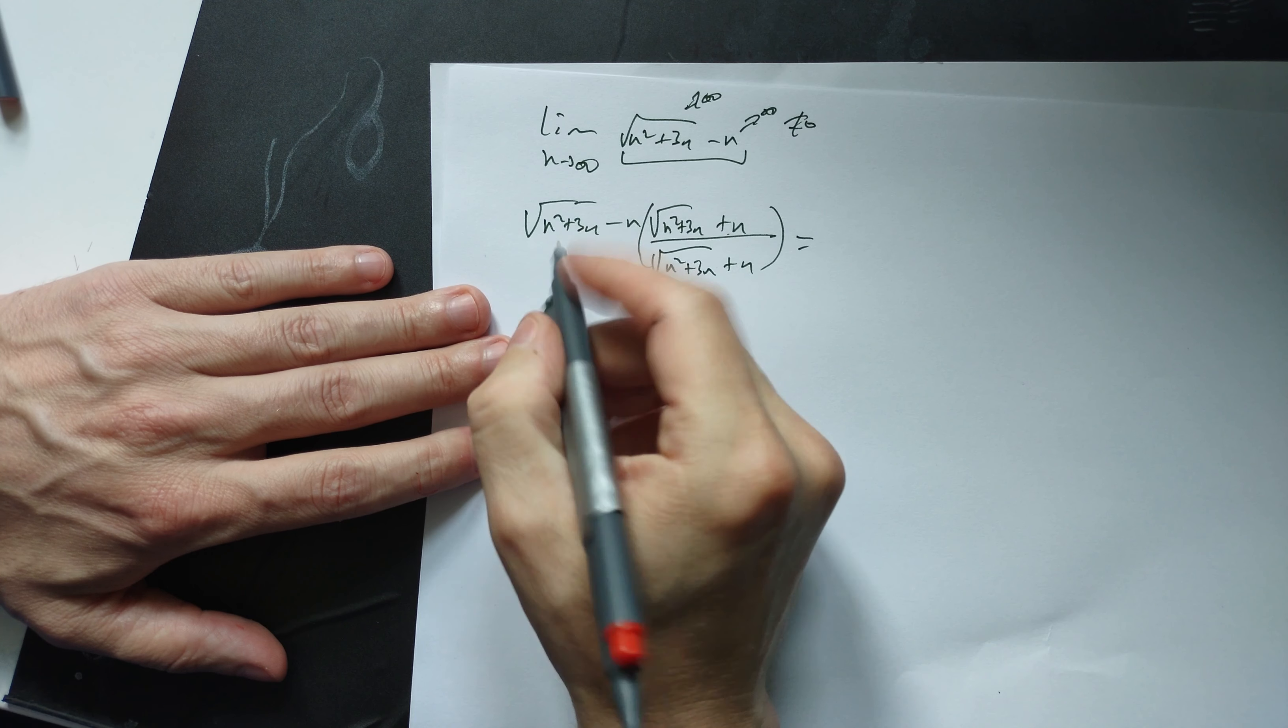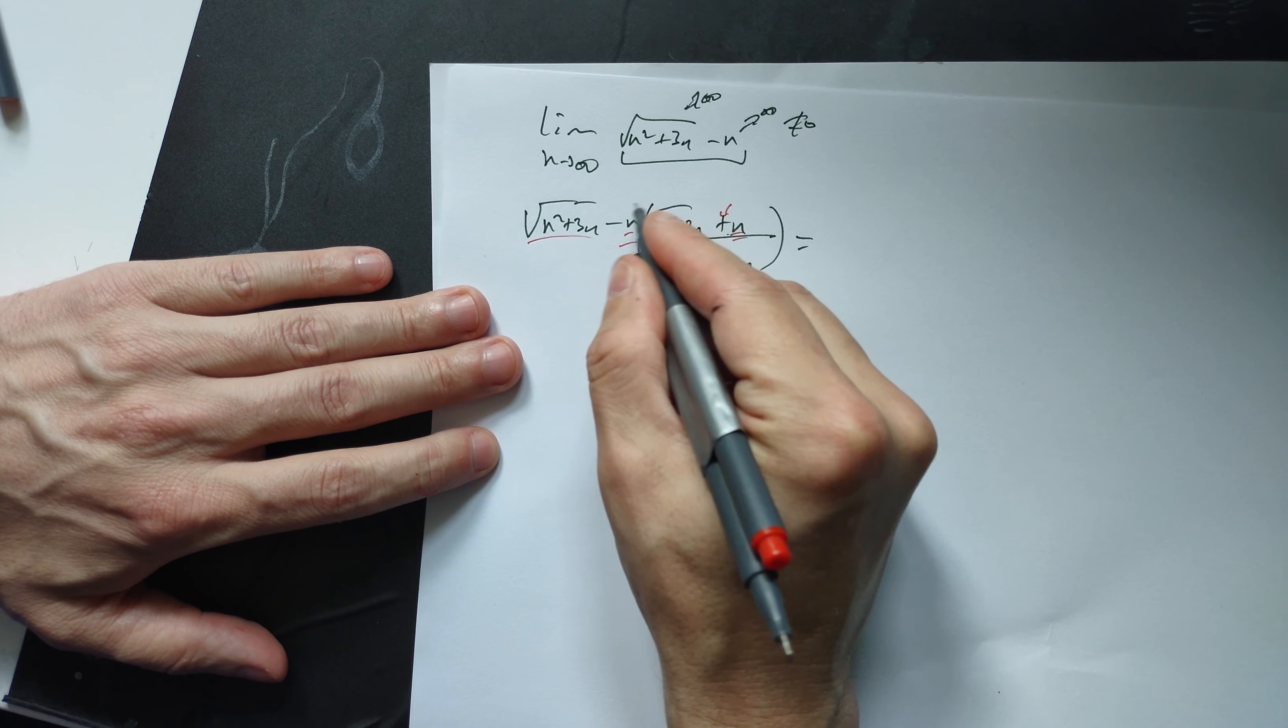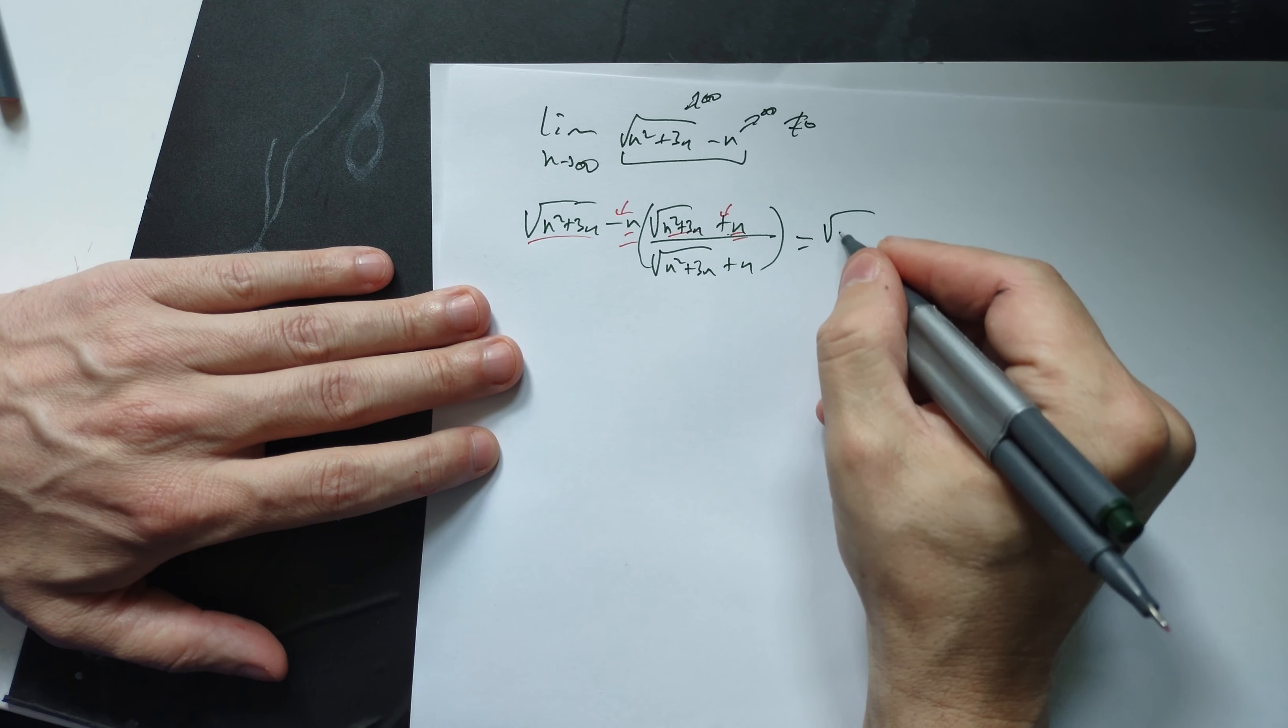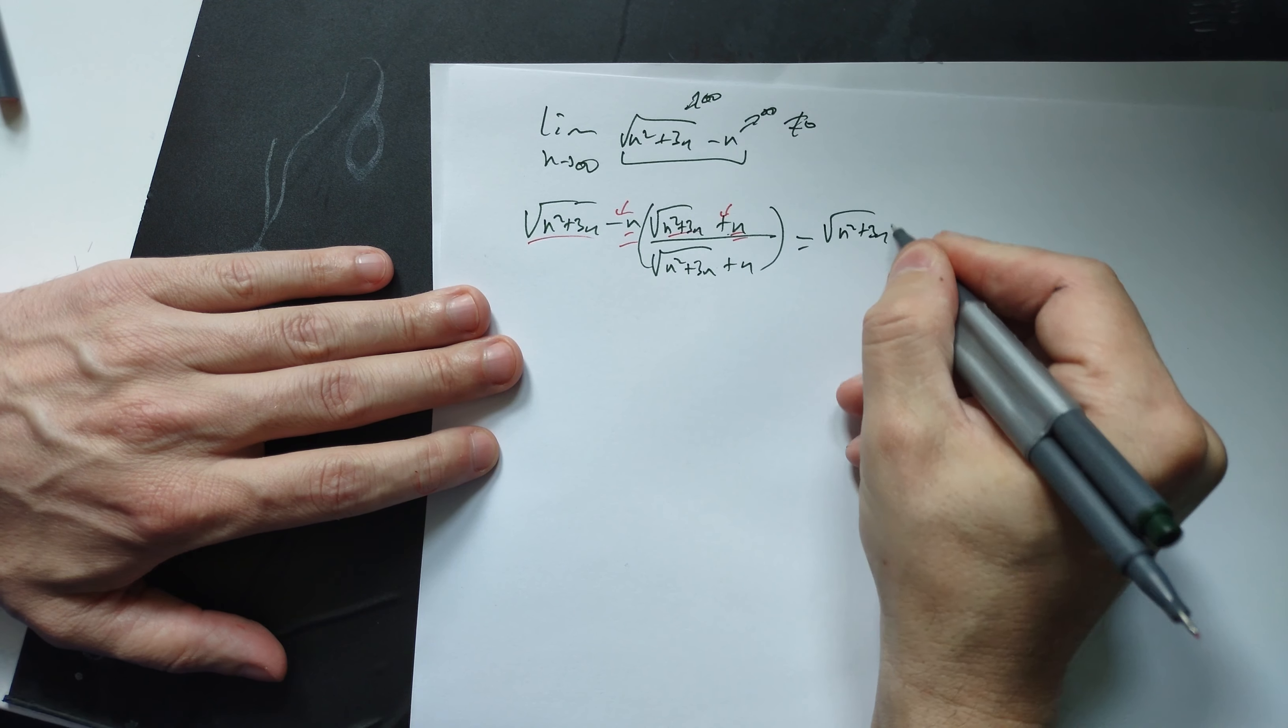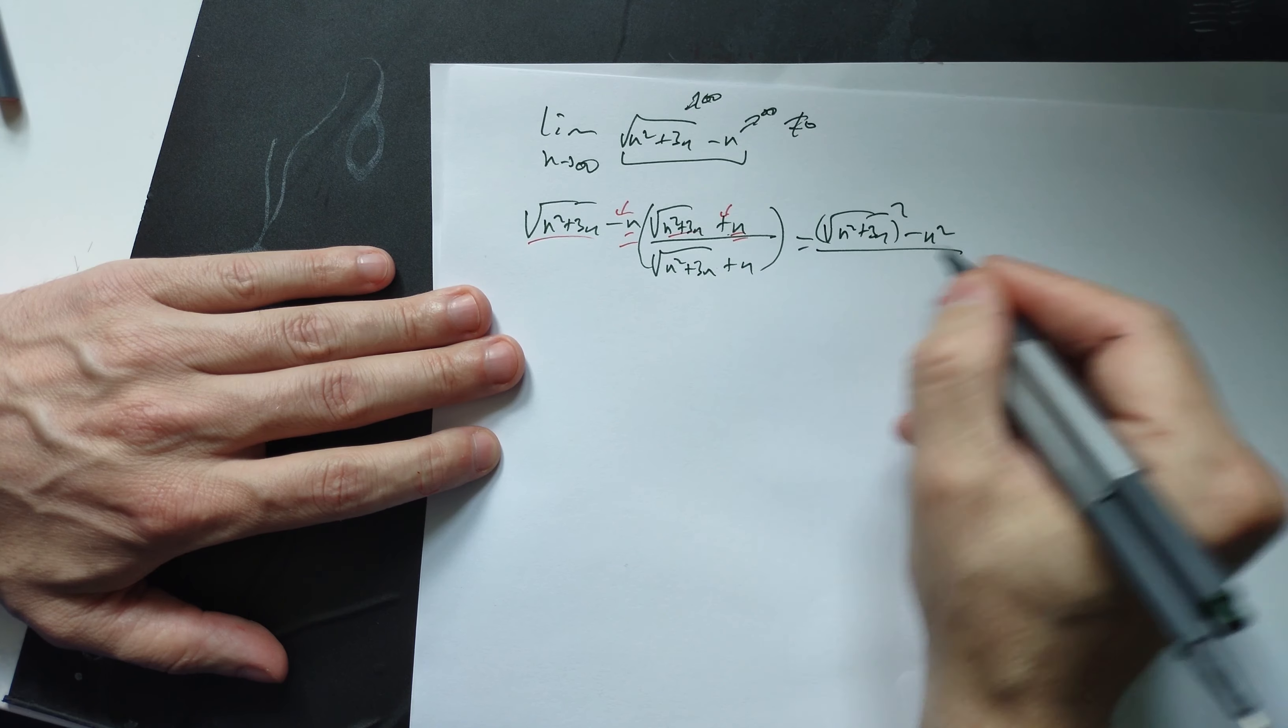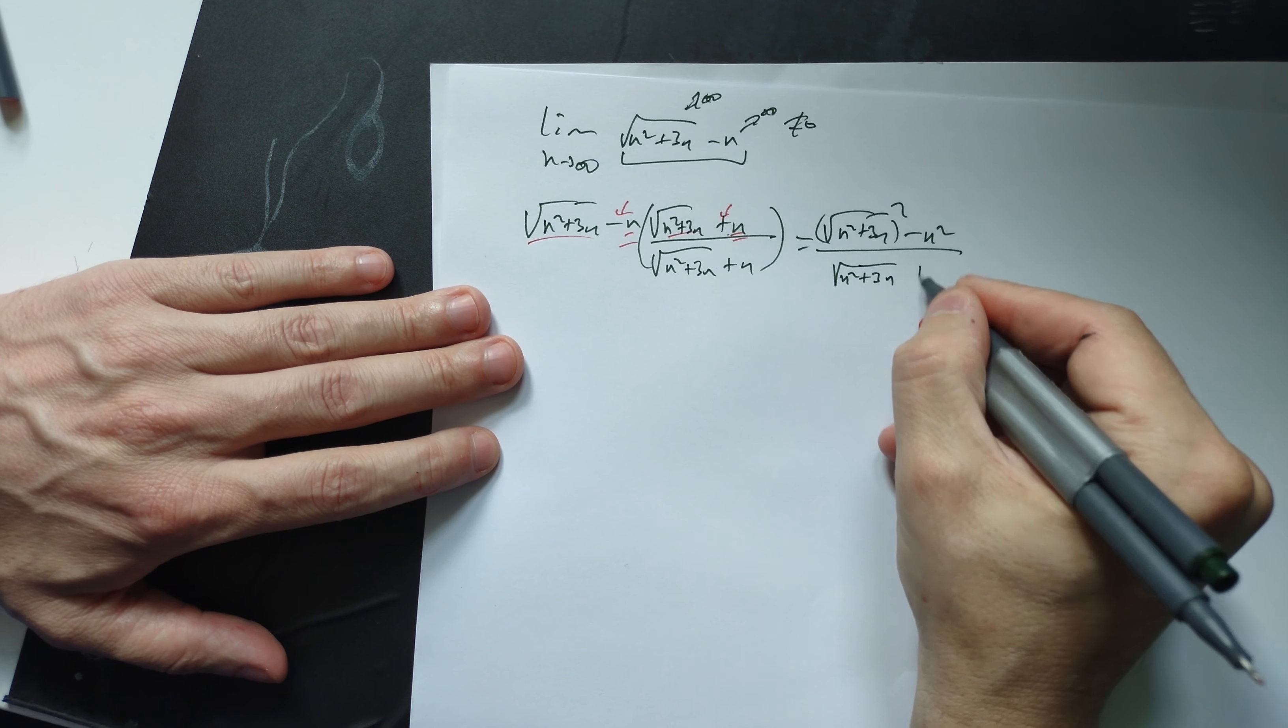Work this out. This is the same as this, but the signs are different, so you can apply the difference of squares pattern. This gives you (√(n² + 3n))² - n² over √(n² + 3n) + n.